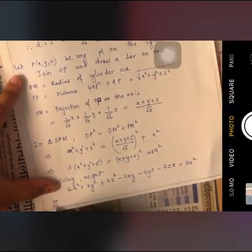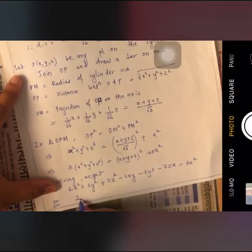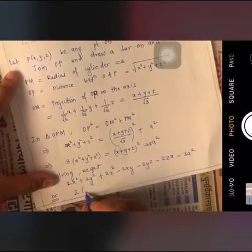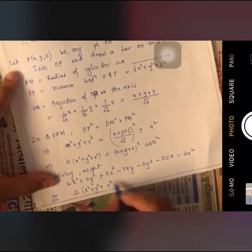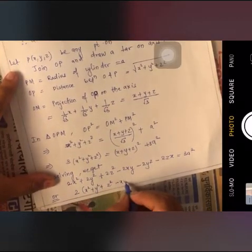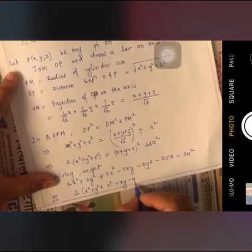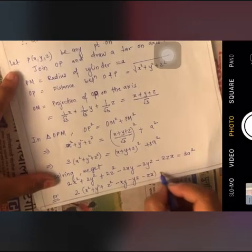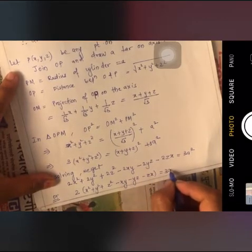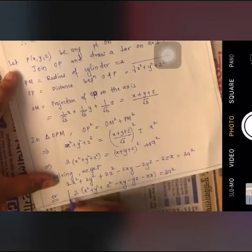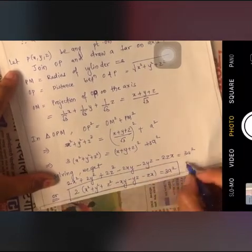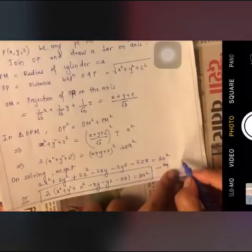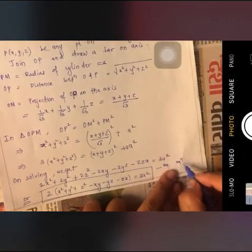On solving, we get the required equation: 2(x² + y² + z² − xy − yz − zx) = 3A², which is the required equation of the right circular cylinder.